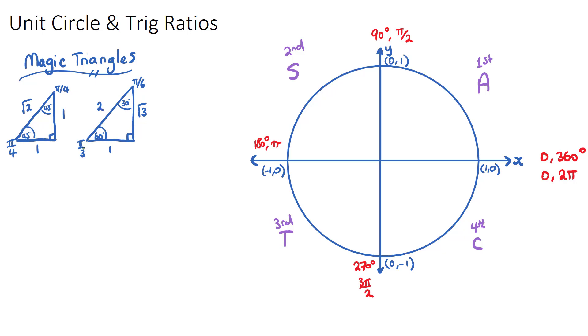And what they are used for is they help us find sine, cos, and tan of key angles. Now, I've drawn my two triangles here and I'll quickly explain them. This is a triangle where we have 45 degrees and 45 degrees. In radians, that's π/4 because it's a quarter of 180 and 180 is π.